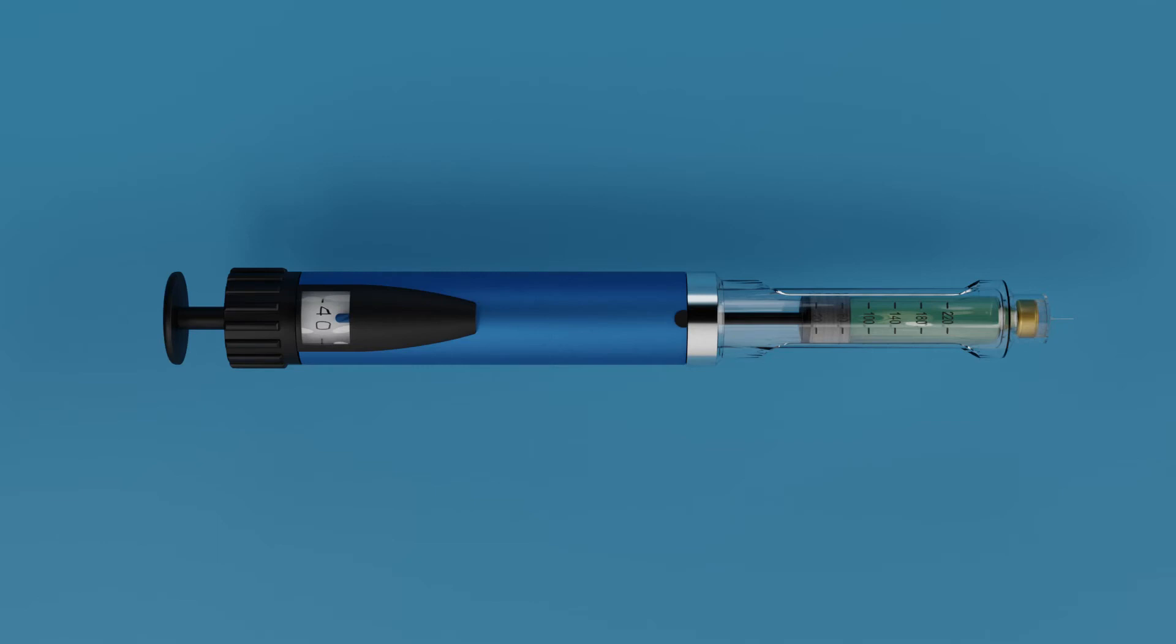In case you dialed more than the recommended units, simply dial the dose dialer in the opposite direction to reach the desired dose unit.